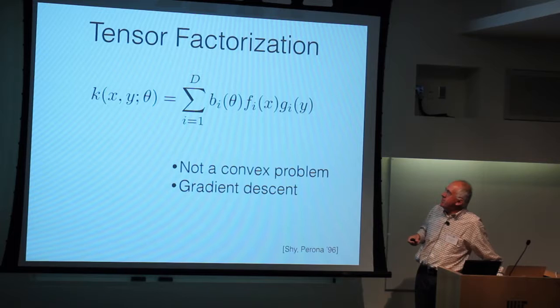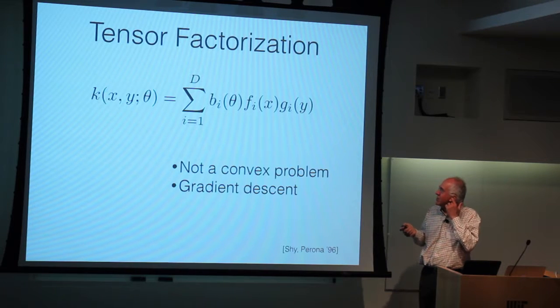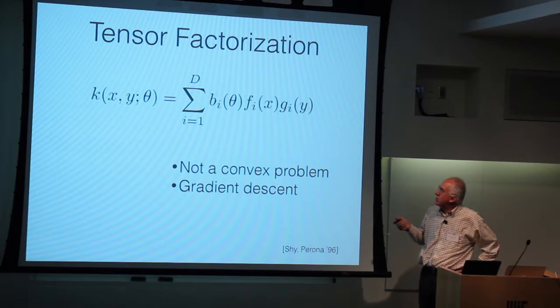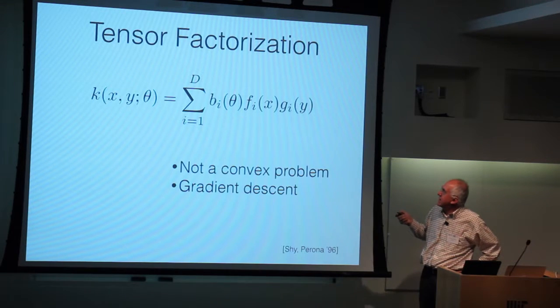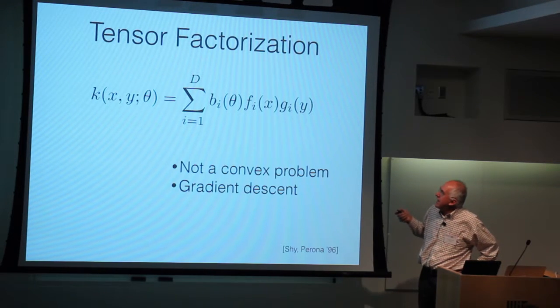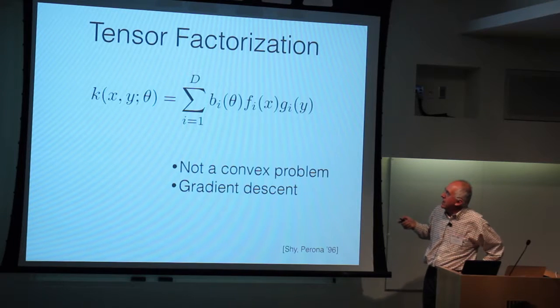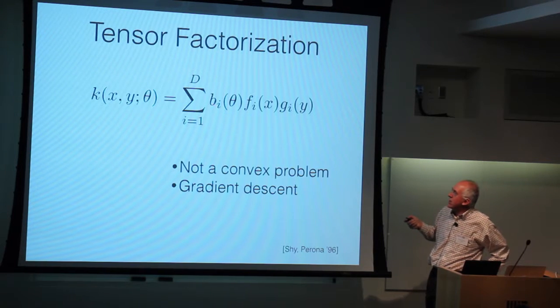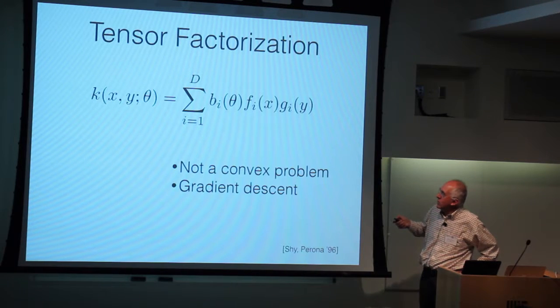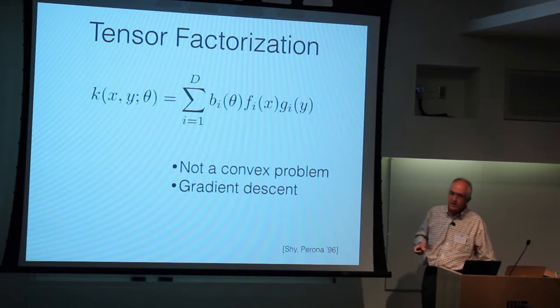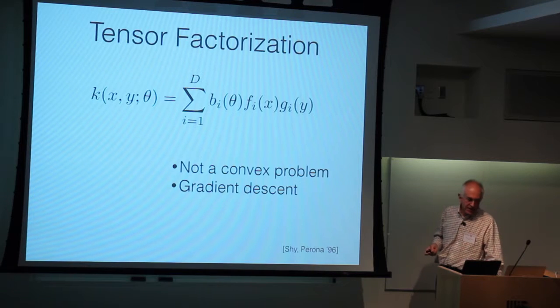If you want to generalize to tensor factorization, not only separable in two variables, but separable in three variables or more, then the theorems are less powerful. Basically it's an NP-complete problem. You've got to gradient descent your way towards the best approximation, but this is perfectly doable numerically and it's not a big deal.